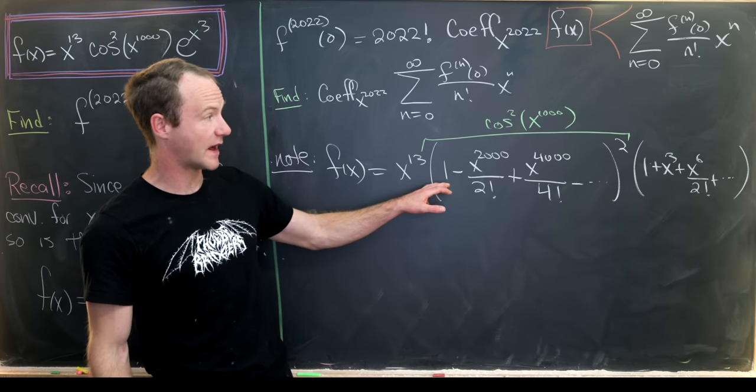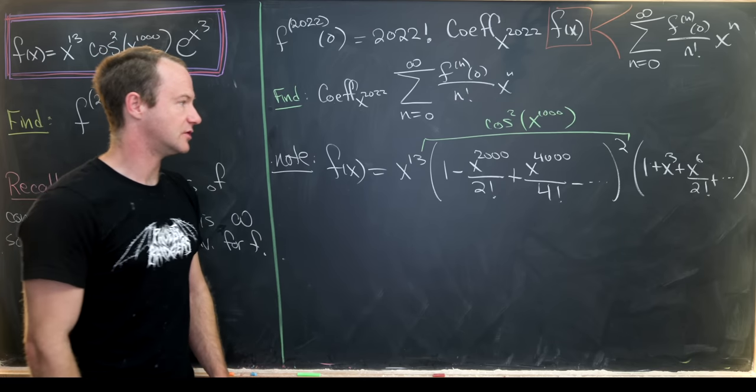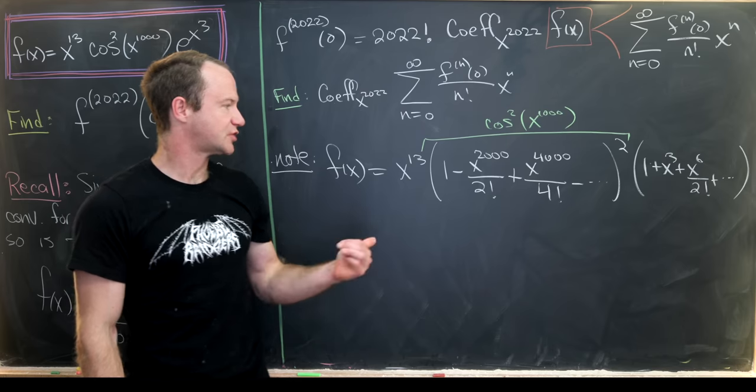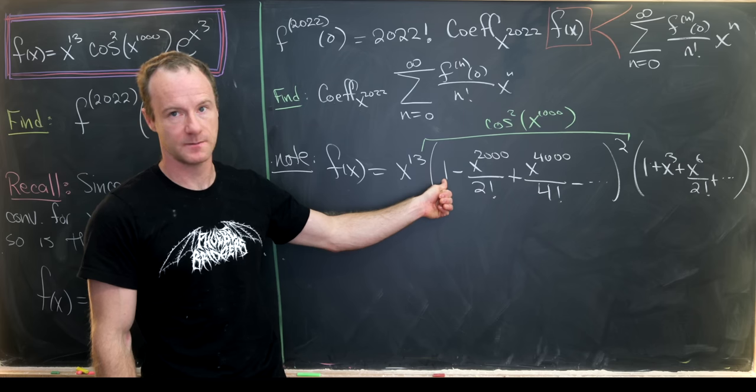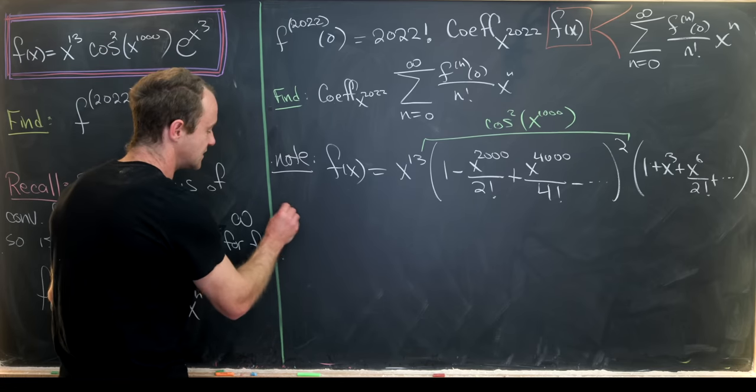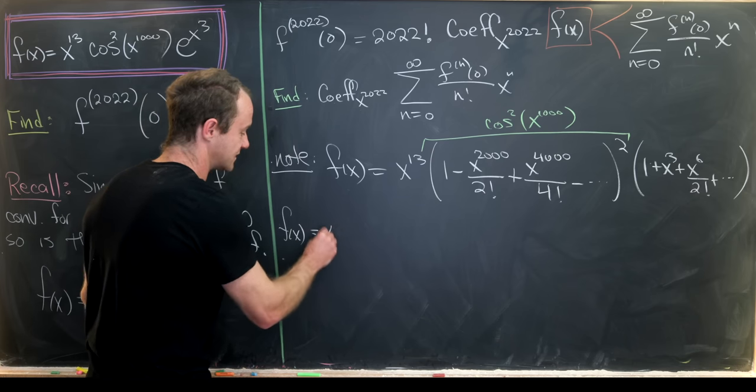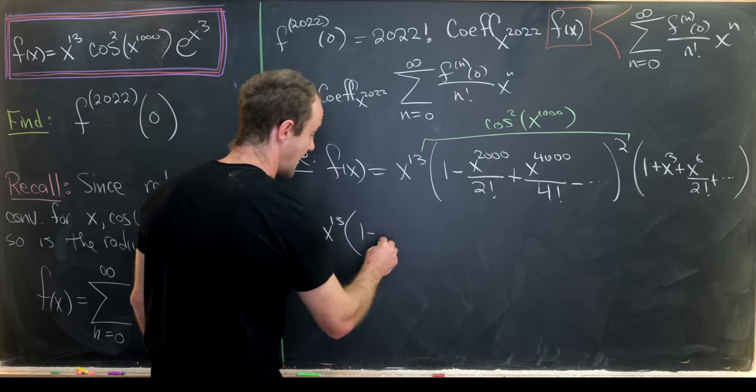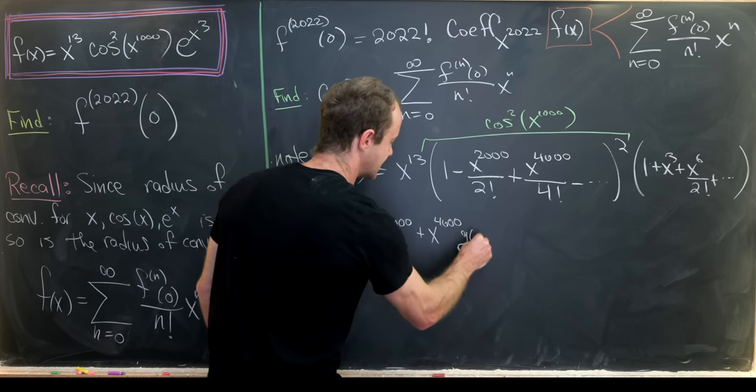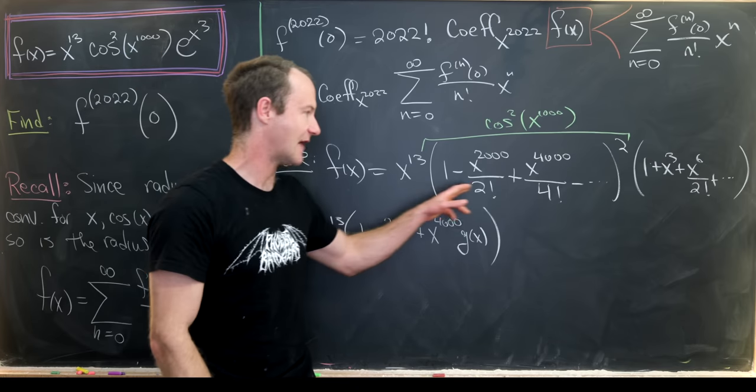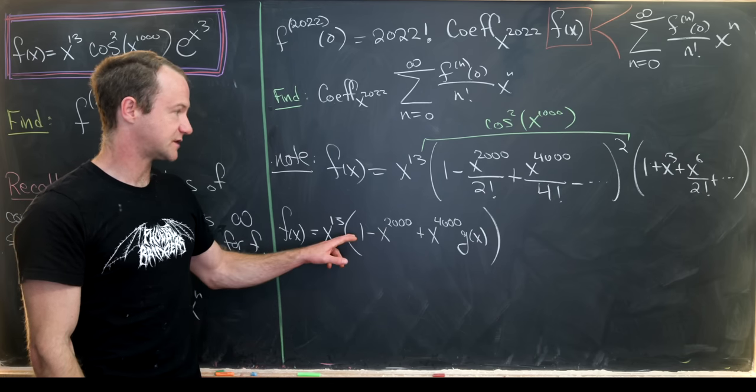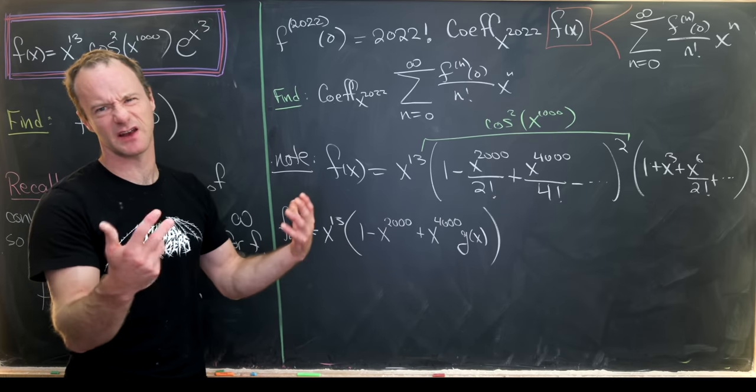But now I'll square this out but only keep the stuff that I need. So notice I will not need an x to the 2000 times an x to the 2000 term because that gives us an x to the 4000. So I only need the terms that are achieved by multiplying 1 to 1, 1 to this x to the 2000 over 2 factorial, and then the kind of complementary symmetric term with that. So let's write out what we have.